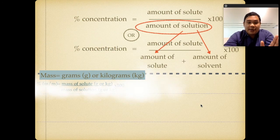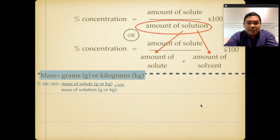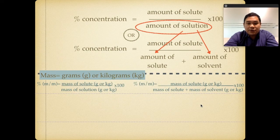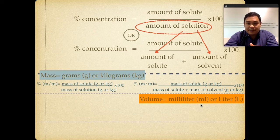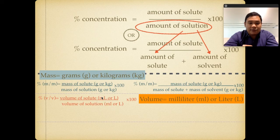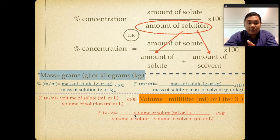If we use mass, the unit will be grams or kilograms. The general formula for percent mass over mass is: mass of solute divided by mass of solution, times 100 — or equivalently, mass of solute divided by (mass of solute plus mass of solvent), times 100. For volume, we replace the units with mL or liters. The formula for percent V/V equals volume of solute over (volume of solute plus volume of solvent), times 100.